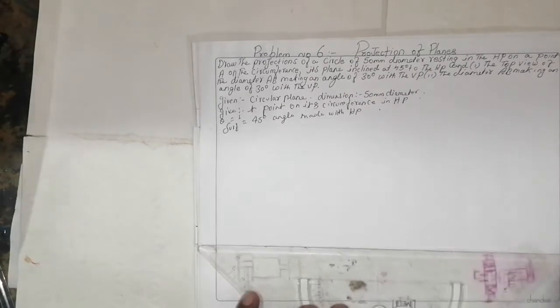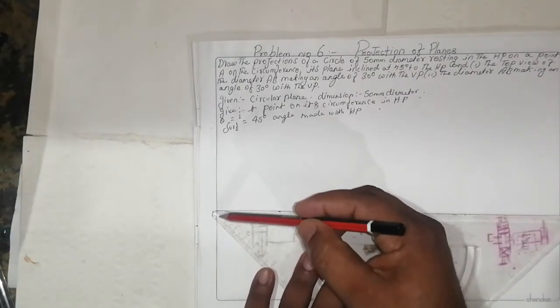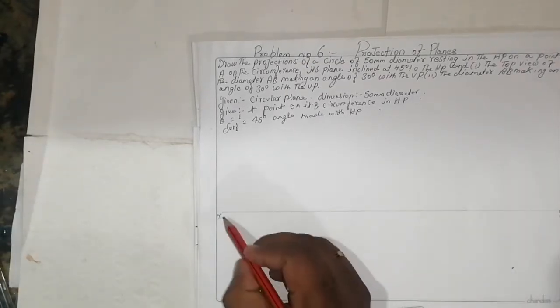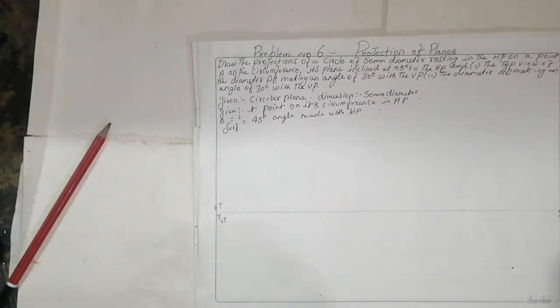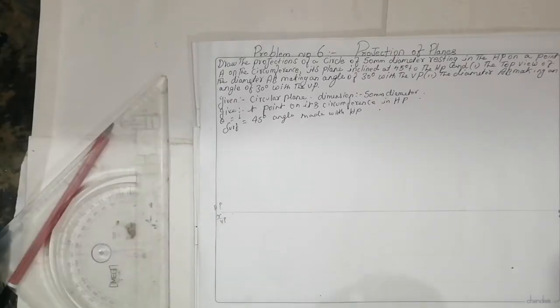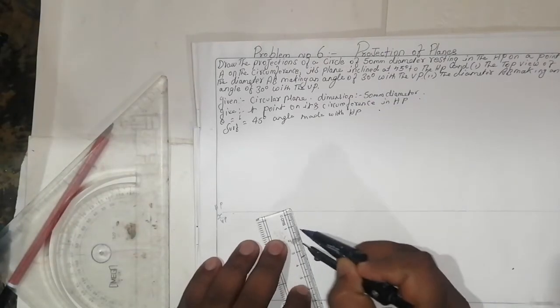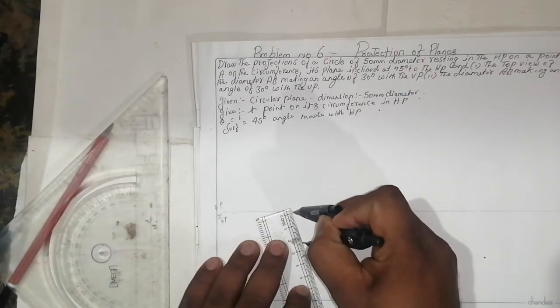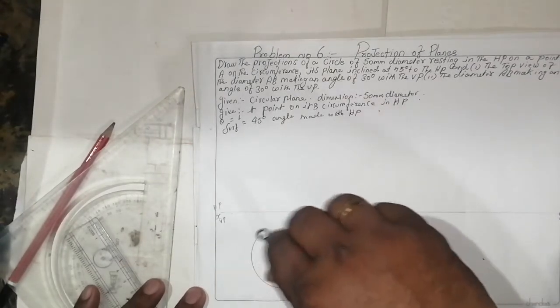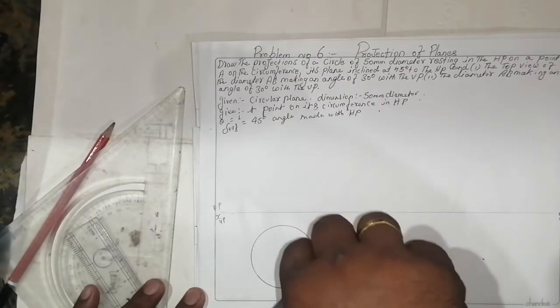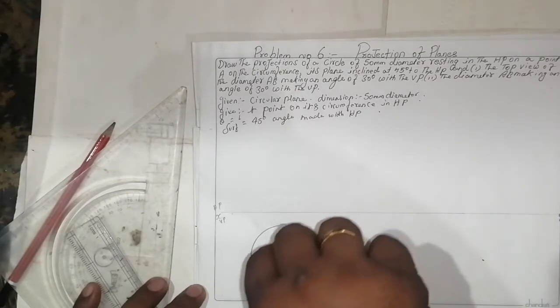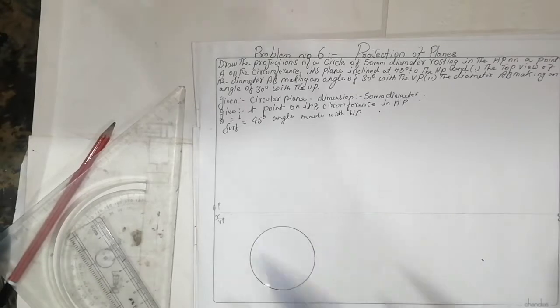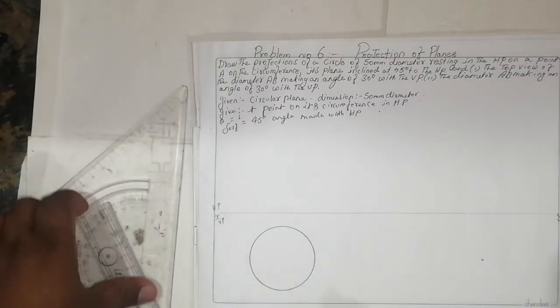Take time to draw the X-Y line representing the HP and VP using a compass. The diameter will be 50mm, so draw one circle with a radius of 25mm.